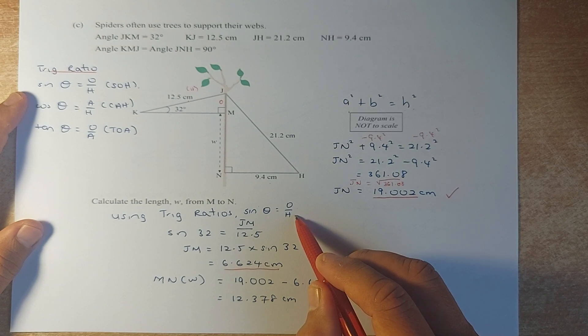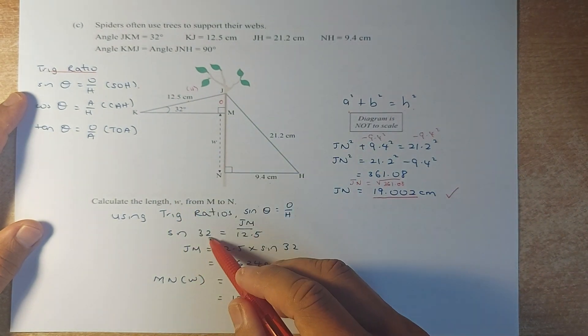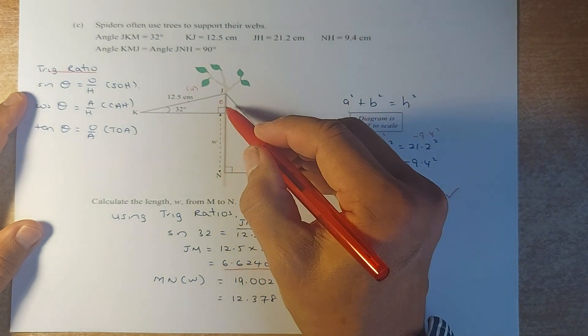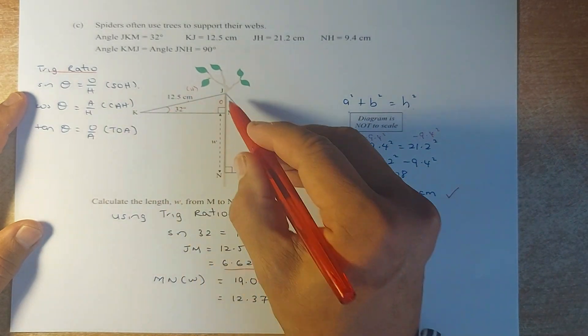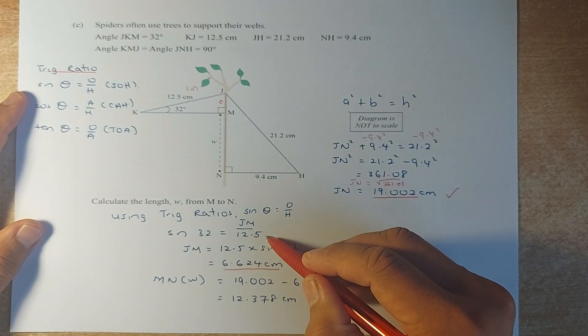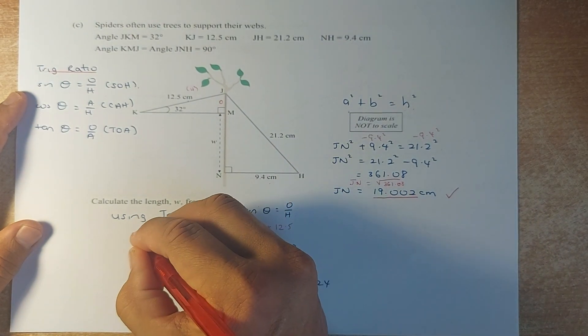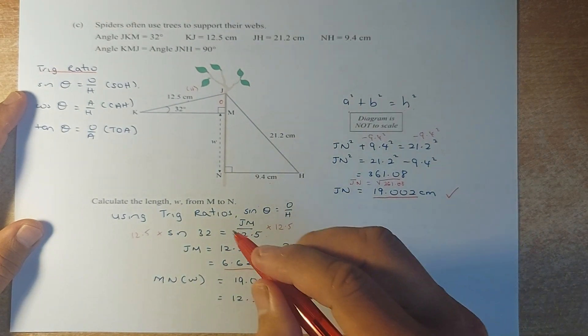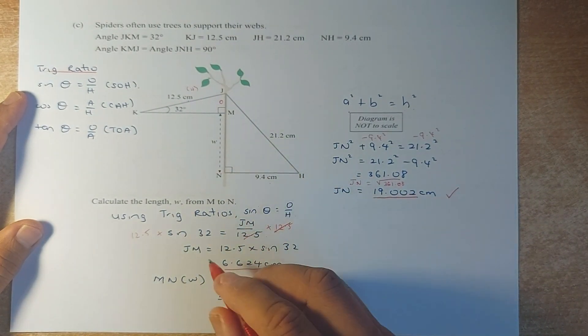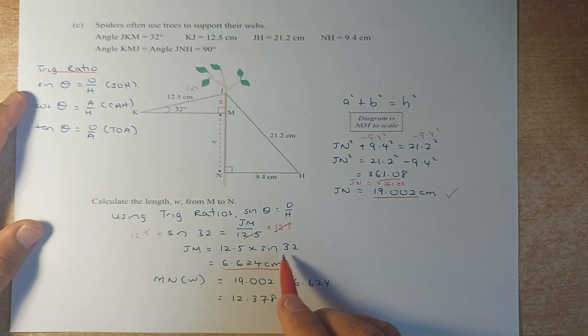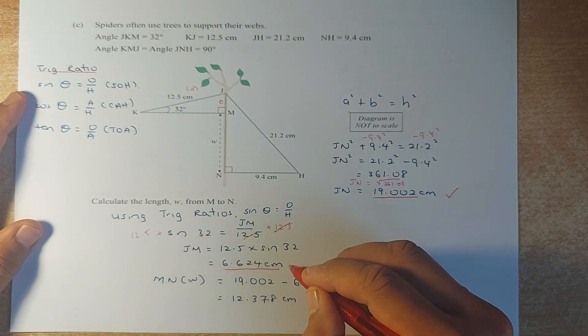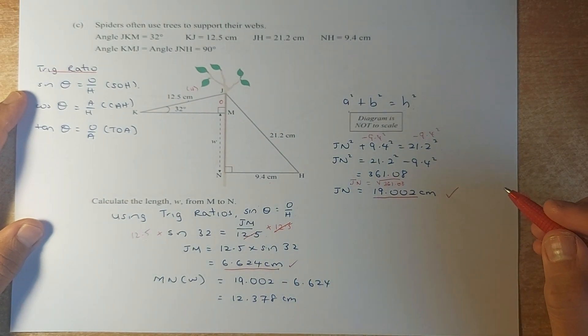Next step, substitute. The angle is 32. So sine 32. JM is what we're going to find. And the hypotenuse is 12.5. To get your JM, you multiply 12.5 on the right. You multiply 12.5 on the left. The 12.5 will cancel out. So JM is 12.5 times sine 32. And the answer is 6.624.